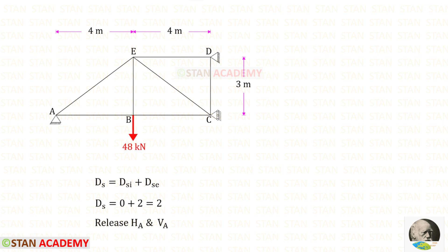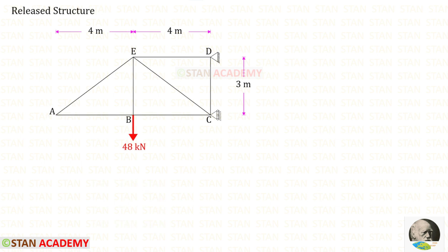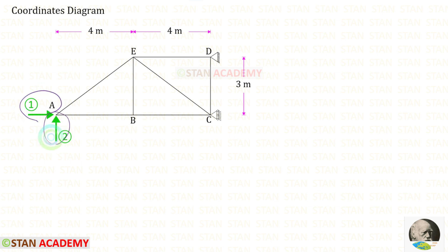This truss has only external degree of static indeterminacy. Out of the five reactions we need to remove any two reactions. From point A I am going to remove the horizontal reaction HA and the vertical reaction VA, removing the hinged support from A. This structure is now called the released structure. Let us draw the coordinates diagram.